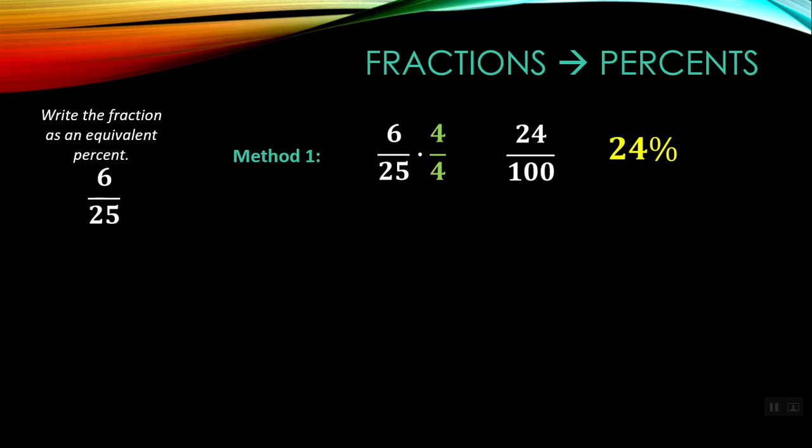However, if the denominator of the fraction isn't easily multiplied by an integer to make 100, then we've got to use Method 2, which is using long division. So we divide 6 by 25, and that gives us a decimal form, and then we can transform that decimal form 0.24 into 24%.